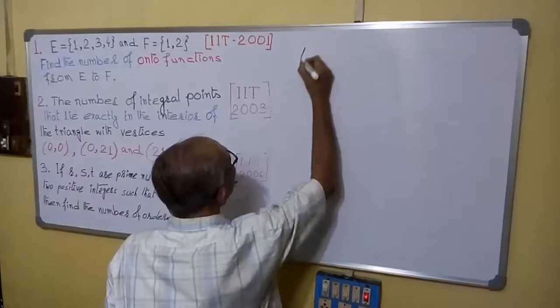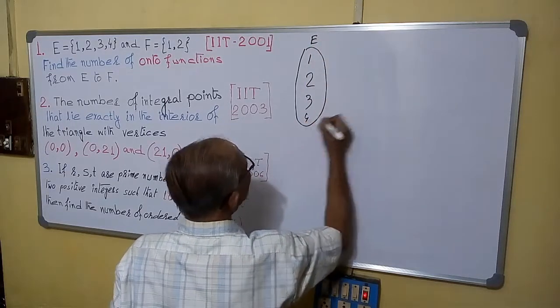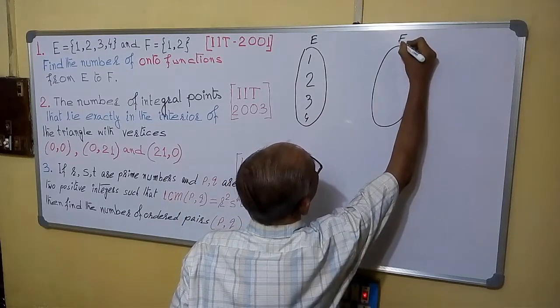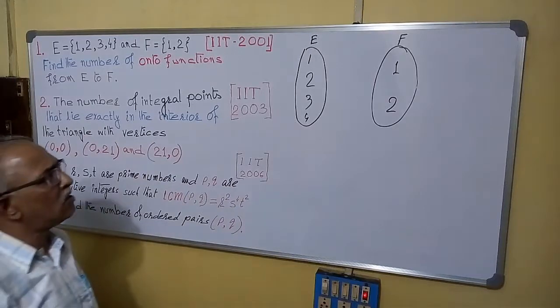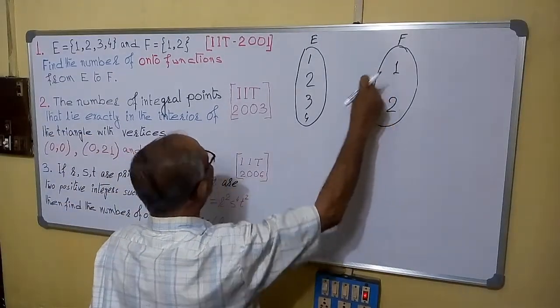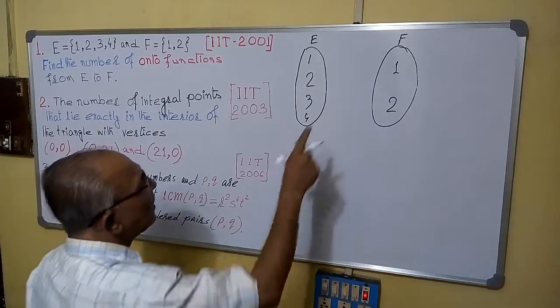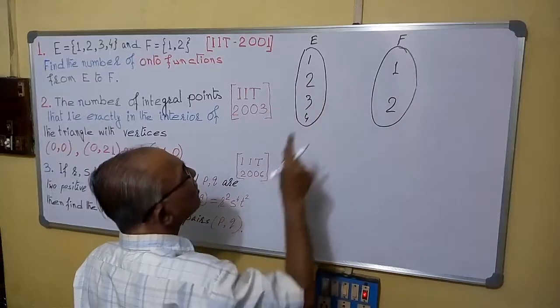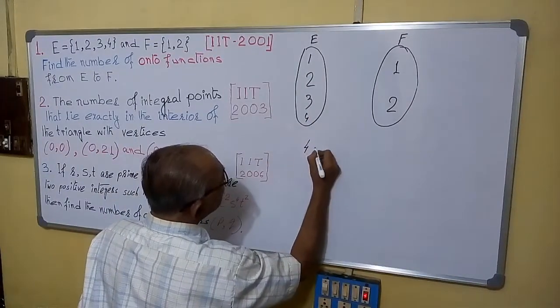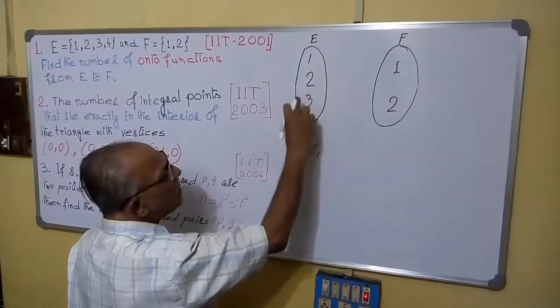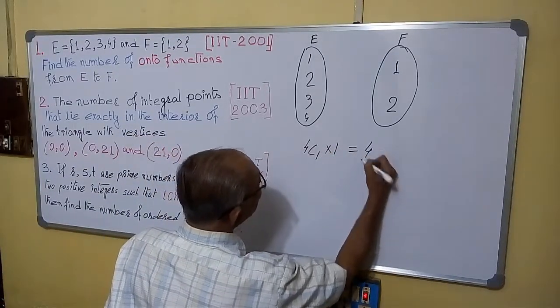Suppose this is our E. It is 1, 2, 3, 4 and this is F. It is 1 and 2 is there. Onto function means that at every point an arrow should reach. Let us assume that 1 is associated with only 1. When 1 is associated with only 1, we can choose that 1 in 4C1 ways. And the remaining 3 will be bound to associate with 2. So that can be done in 1 way. So this one equals to 4 ways.